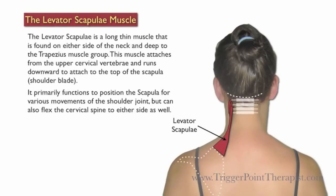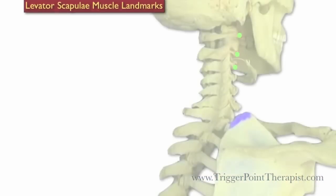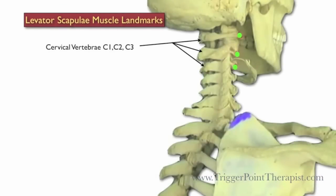The levator scapula is a long thin muscle found on either side of the neck, deep to the trapezius muscle group. This muscle attaches from the upper cervical vertebrae and runs downward to attach to the top of the scapula. It primarily functions to position the scapula for various movements of the shoulder joint, but can also flex the cervical spine to either side.